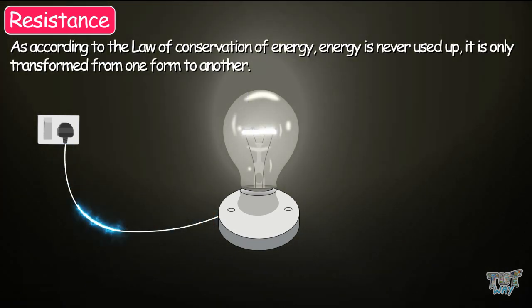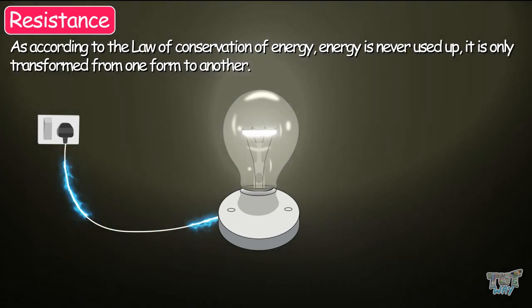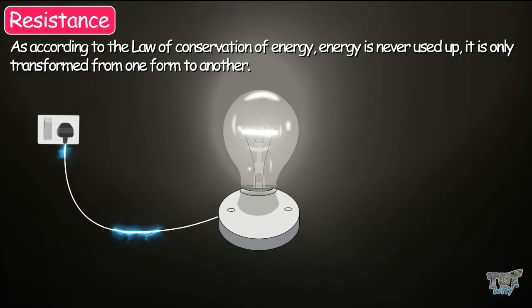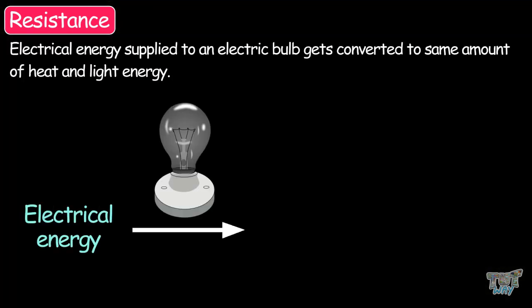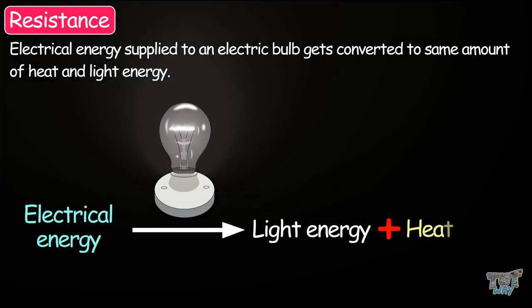And according to the law of conservation of energy, energy is never used up. It is only transformed from one form to another. So electric energy supplied to an electric bulb produces the same amount of light and heat energy.